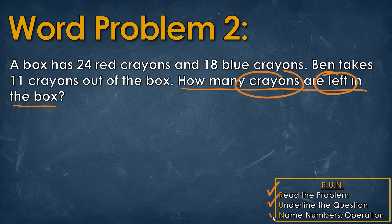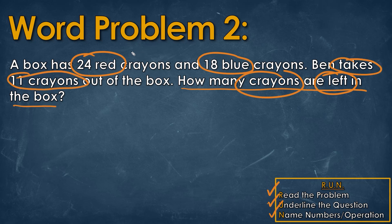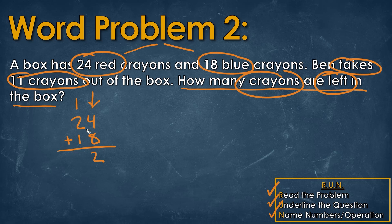Lastly, we're going to name the numbers and the operations. We see that we have 24 red crayons and 18 blue crayons, and Ben takes 11 crayons out of the box. We have 3 numbers, so we know we have 24 and 18 crayons to start with, so we're going to add those two numbers up. 24 plus 18 — we always start on the right side, so 4 plus 8 is going to be 12. We put the 2 right here, carry that 1 over to the next column. So we have 1 plus 2 plus 1, which is 4. Our answer for that part is going to be 42.